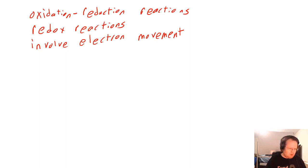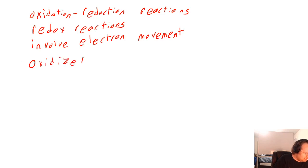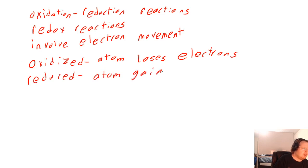Let's look at what one of these reactions is and what the parts of it are. An oxidation-reduction reaction has two parts. First, something in the reaction is oxidized, and what that means is that atom loses electrons. The other part of the reaction is something is reduced — this is the atom that gains electrons.